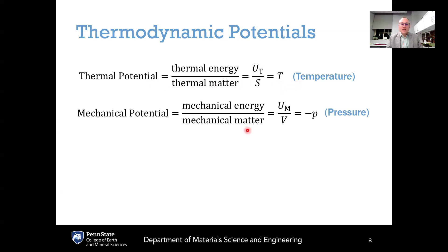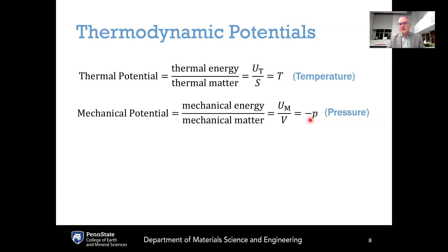For mechanical potential, this is defined as the amount of mechanical energy U_M divided by the amount of mechanical matter, the volume V. Again, two extensive quantities divided give us the intensive mechanical potential — better known as the pressure, or more specifically the negative pressure, because pressure is defined as a hydrostatic compression rather than a tension. That is why this picks up a minus sign.